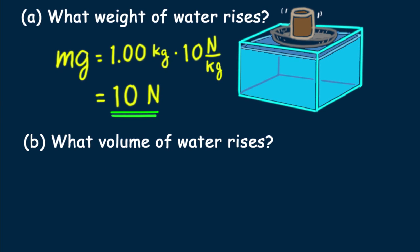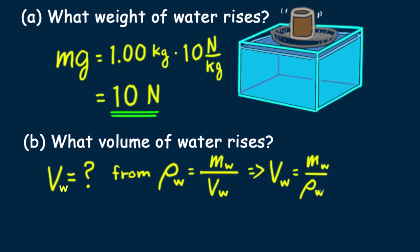Part B. What volume of water rises? Let's focus on what we're looking for. V_w equals what? From ρ_w equals M_w over V_w, we see that the volume of water equals the mass of the water divided by its density. From part A, the weight of water displaced is equal to the weight of the iron,